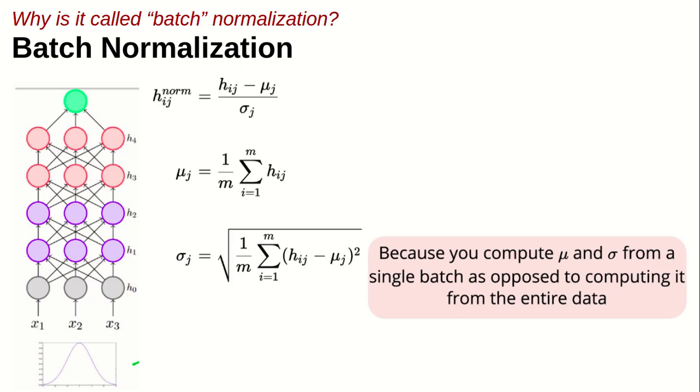So at this time, m would not be the total data size, it would be like 32 or whatever your batch size is. This is the difference only, and you got the reason why we do batch normalization for the hidden layer.